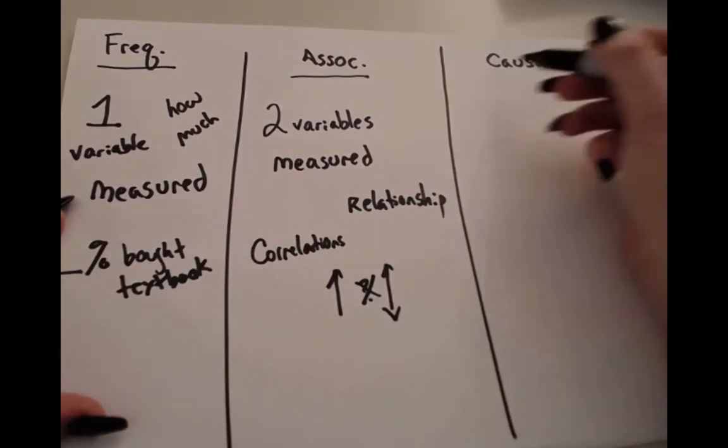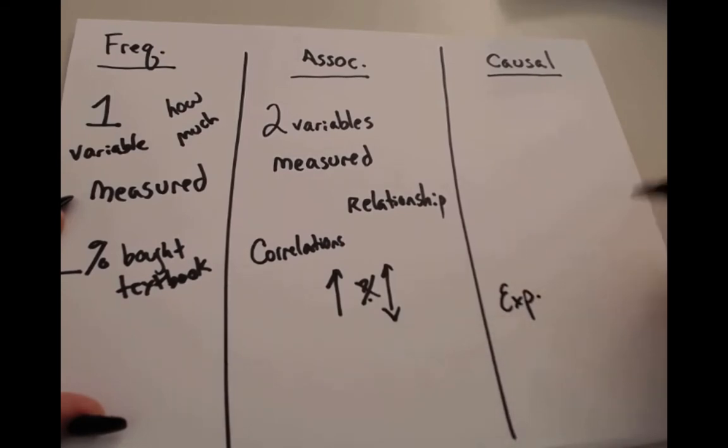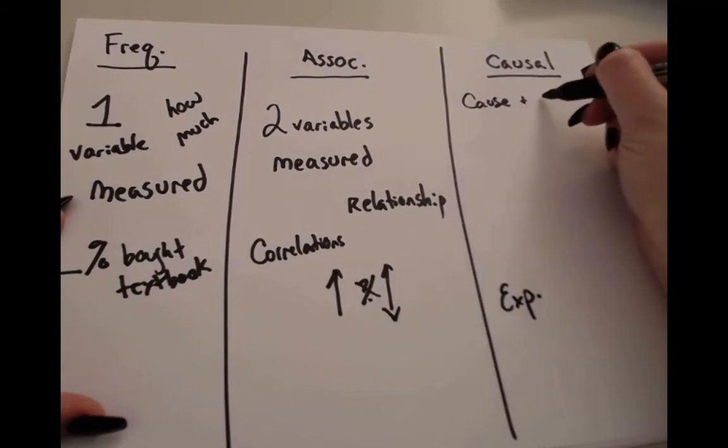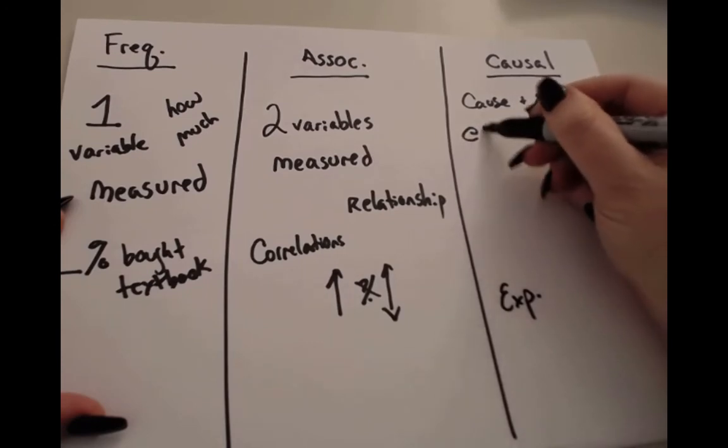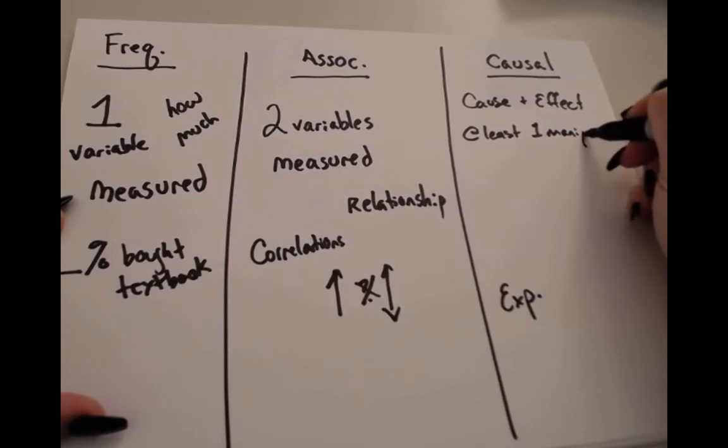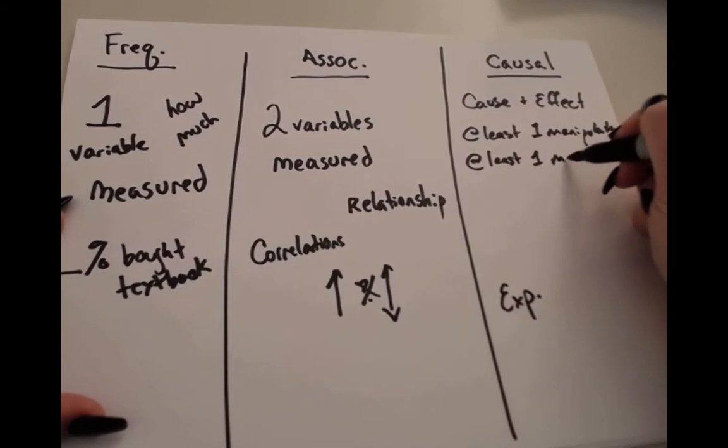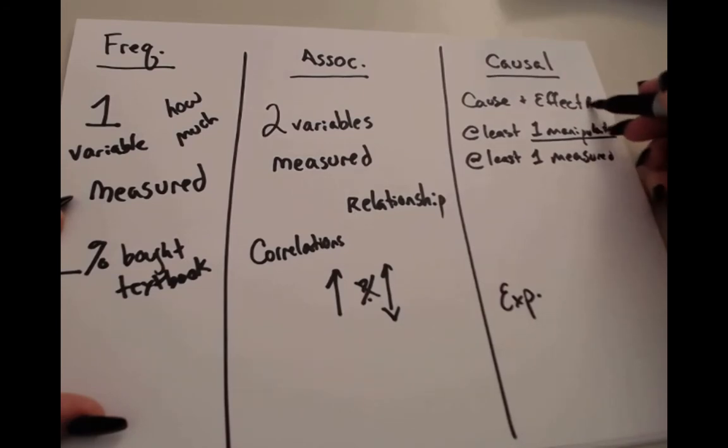Causal claims are the third one. Causal claims are usually experiments where we're trying to show cause and effect. Now, in a cause and effect relationship, we have to have at least one variable that is manipulated and at least one variable that is only measured. The real key here is that a variable is manipulated. And again, we're trying to establish a cause and effect relationship.